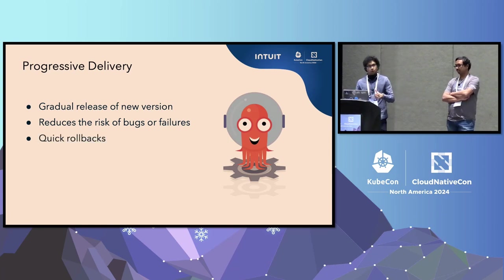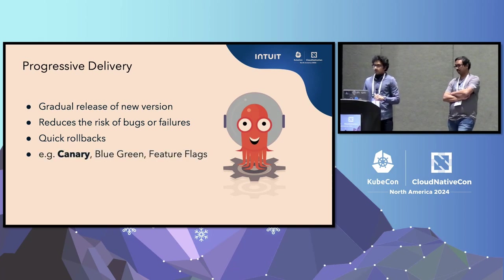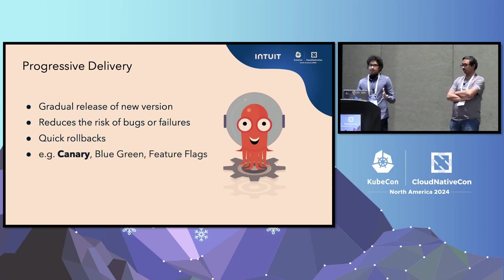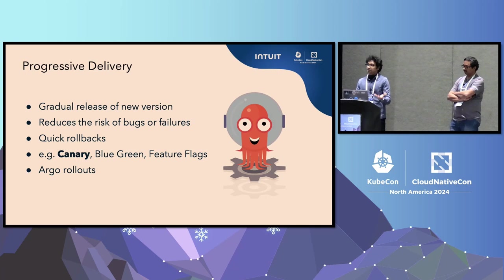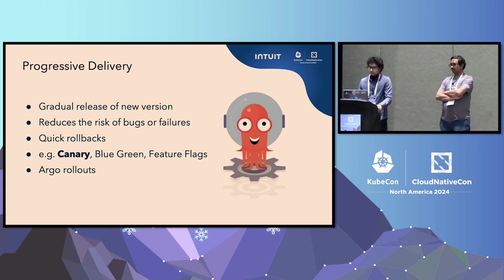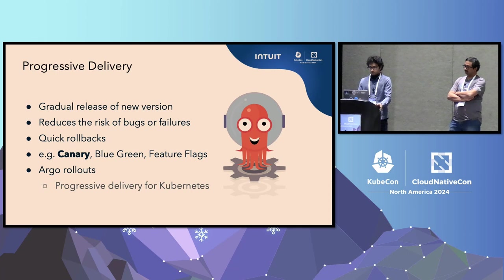Progressive delivery also gives us a quick rollback mechanism — if something goes wrong, we can just roll it back. A very good example is canary deployments — canary-based rollbacks and canary-based progressive delivery. A very good example here is Argo Rollouts, which we have been using for a long time, and for this purpose we use Argo Rollouts as well.